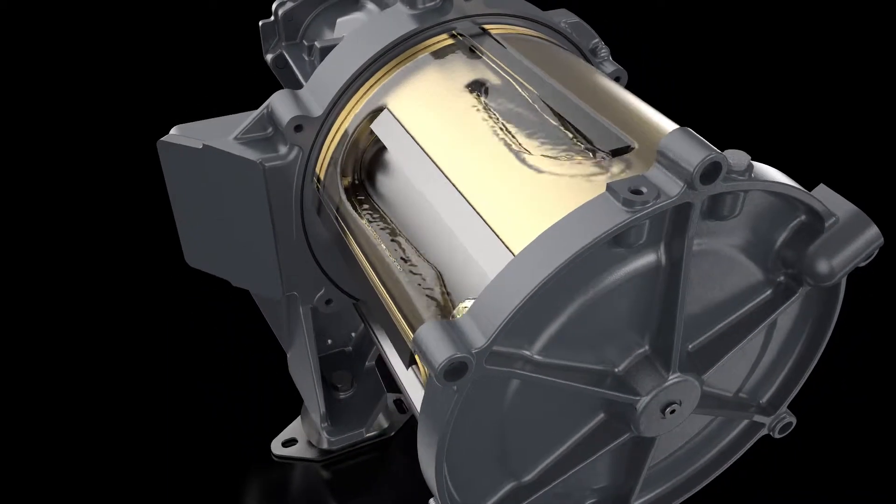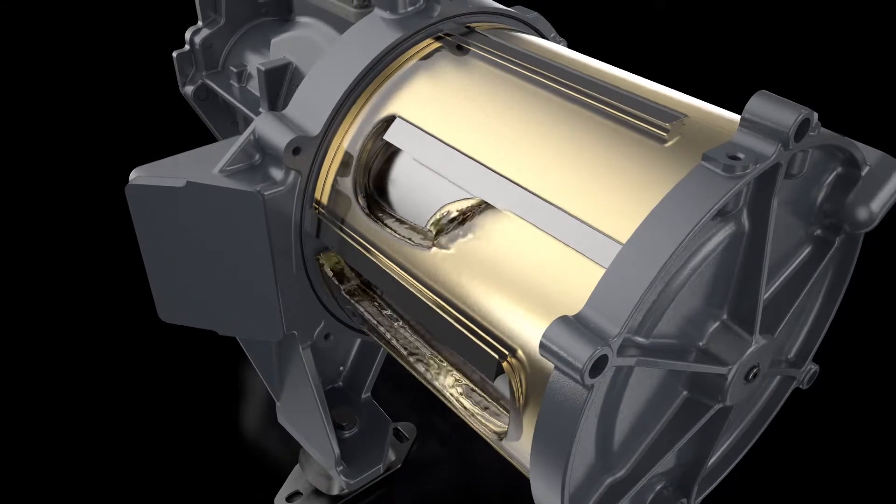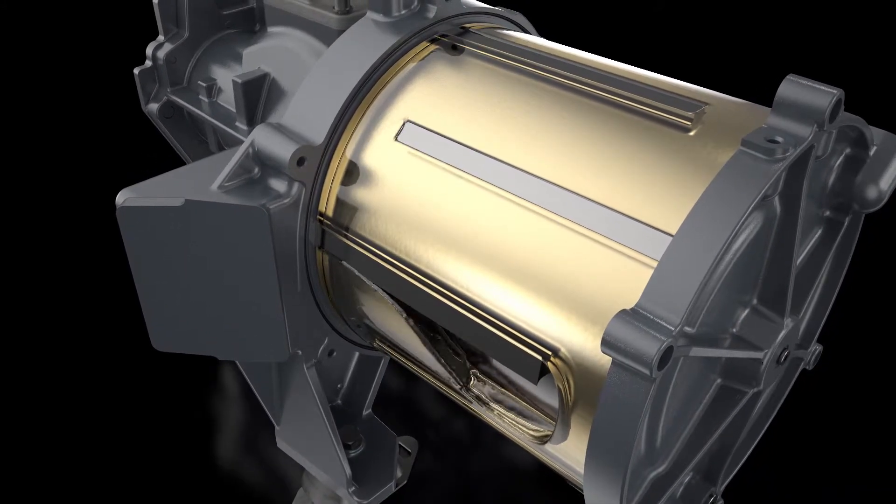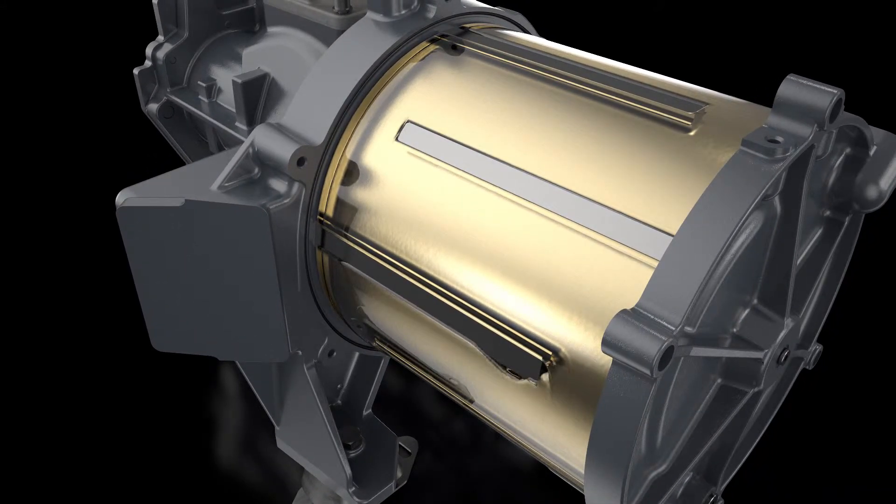The oil then continues to the screw element, where it lubricates and cools the rotors. This process is repeated over and over. If the oil gets too hot, it runs through the oil cooler first before returning back to the motor.